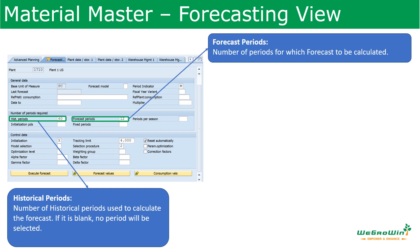Then the forecast periods — the number we enter in this forecast period field is the number of periods for which the forecast has to be calculated. For example, if we enter 10 months, the system will calculate the forecast for 10 months.